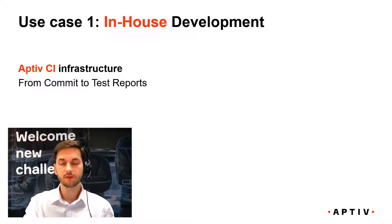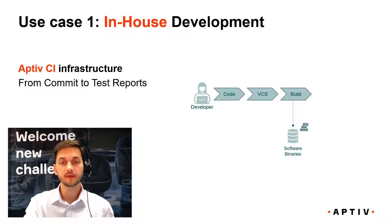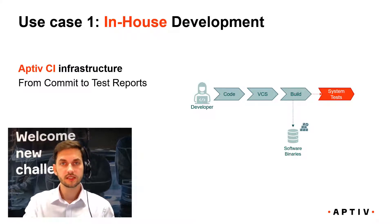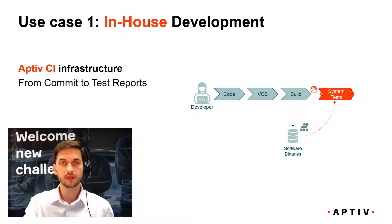We have a developer that writes some code and commits it to a version control system. Once the code is committed, a software build is started. If the software build finishes successfully, the artifacts — like software binaries — would be uploaded to our repository. We would then trigger a start of system test. The system test needs information about the location of the newly built software binaries so we can download them to our system test environment, flash the system under test, execute the test cases, and generate artifacts like test reports that would also be uploaded to our repository.